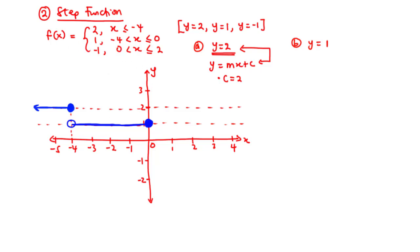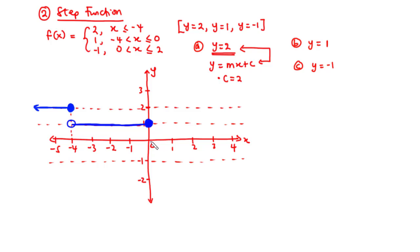Now let's move on to the third: y equals negative 1. We have dotted lines cutting through negative 1 on the y-axis. The constraint is 0 is less than x is less than or equal to 2. On the x-axis, since 0 is less than x, we draw an open circle at 0. And since x is less than or equal to 2, we draw a closed circle at 2. So this is the graphical representation of this step function.